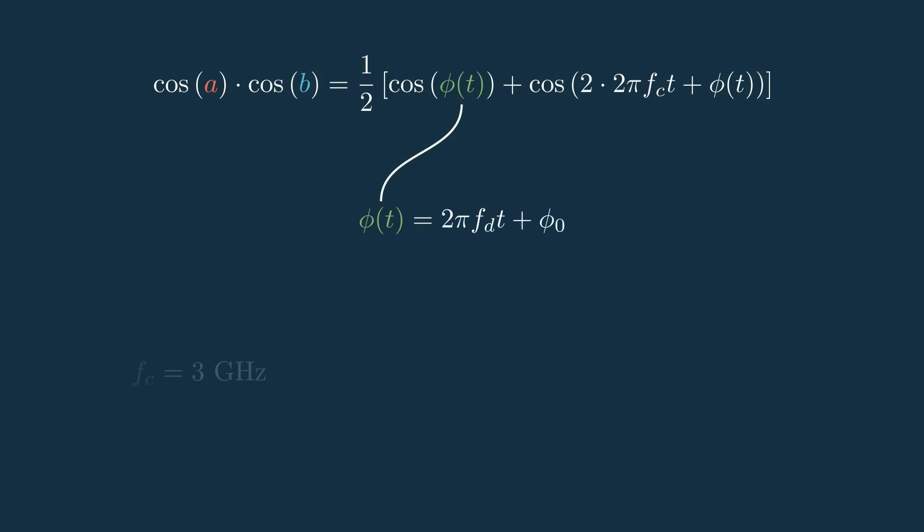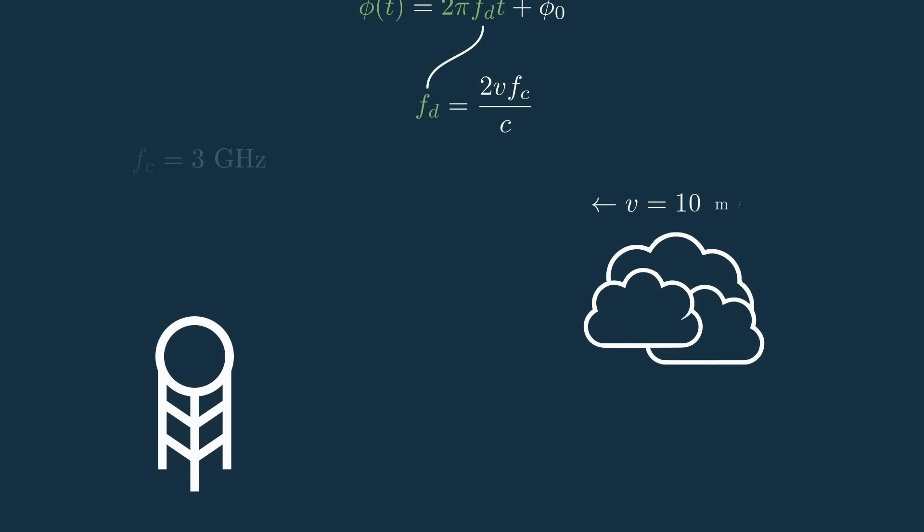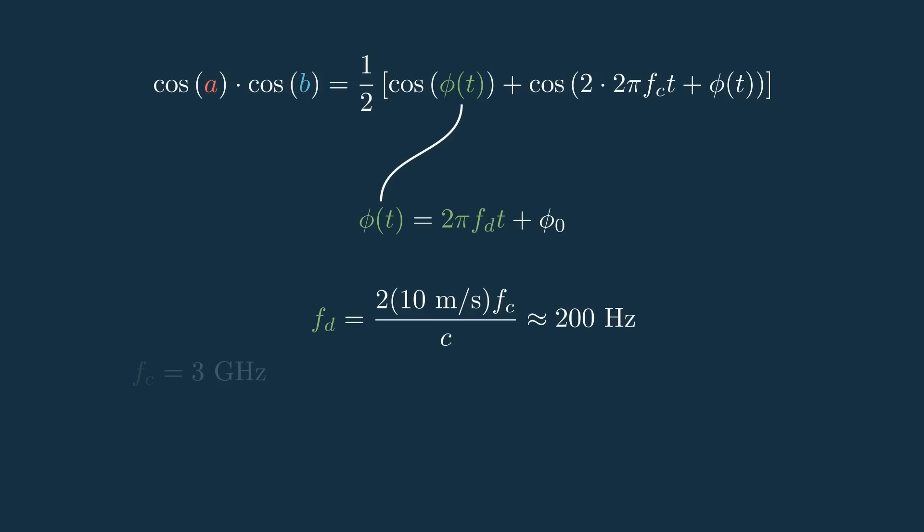More specifically, phi of t has two terms, an angular frequency and an initial phase. The initial phase is a constant between 0 and 2 pi, so we don't care about it too much here. The interesting part though is the frequency term, which is a function of the radial velocity of the target we're looking at, divided by the speed of light. In the cloud we're looking at, say the average velocity is 10 meters per second, which is pretty common. Using the doppler velocity equation, we find that for a target with a velocity of 10 meters per second, the radar would see a doppler frequency shift of about 200 hertz.